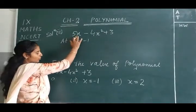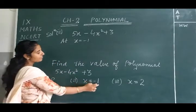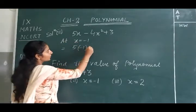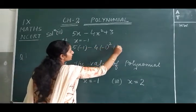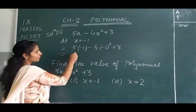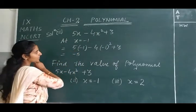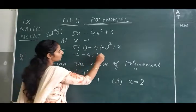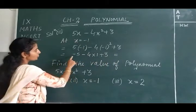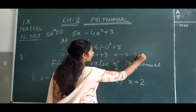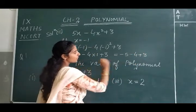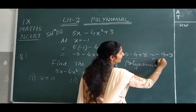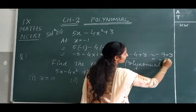Now for the second part, we have to find the value at x = -1. We put x = -1 into the polynomial: 5(-1) minus 4(-1²) plus 3. Now 5 multiplied by -1 is -5. Minus 4 times (-1)² — since the power is even, (-1)² is positive 1, so it becomes minus 4. Plus 3. Solving: -5 minus 4 plus 3. Taking the first two terms together: -5 and -4 gives -9 plus 3. The answer is -6.